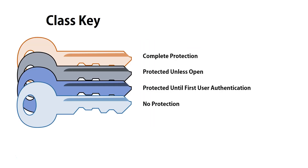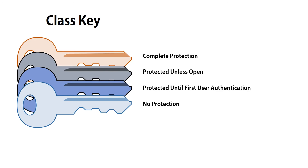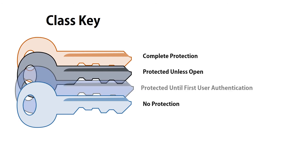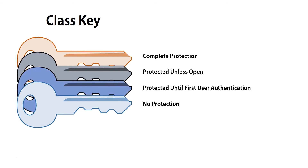There are four different class keys. The first one is called complete protection. The second one is protected unless open. The third one is protected until first user authentication. And the fourth one is no protection.